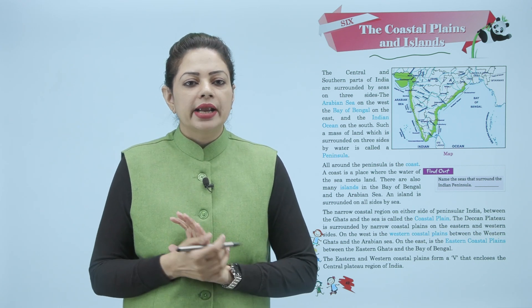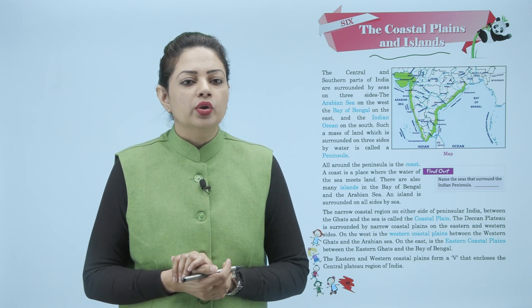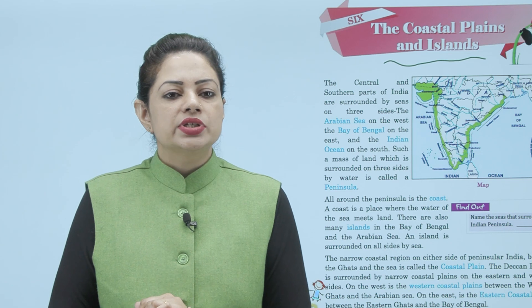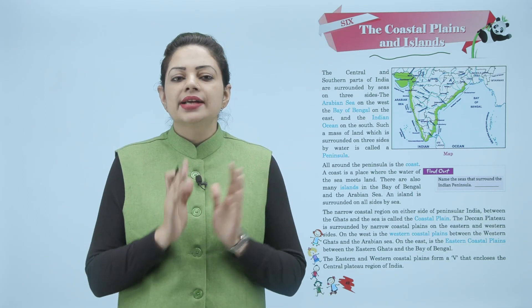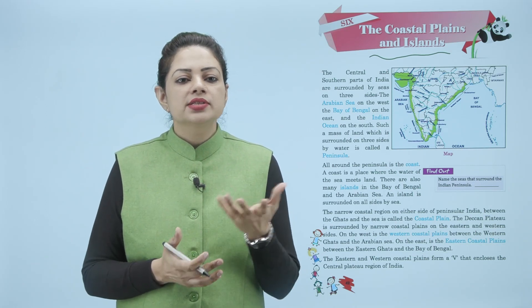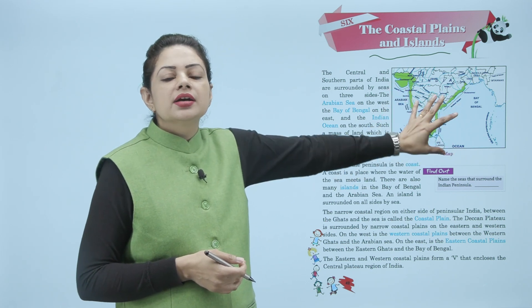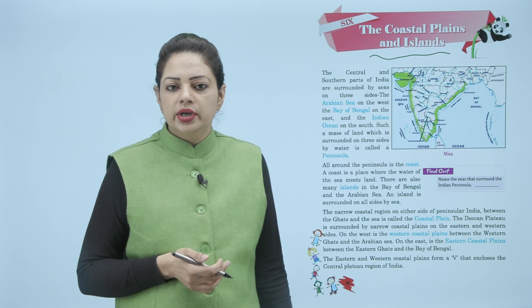The central and southern parts of India are surrounded by seas on three sides — the Arabian Sea on the west, the Bay of Bengal on the east and the Indian Ocean on the south. Such a mass of land which is surrounded on three sides by water is called a peninsula. Aisa land area jo teen sides se water se cover hota hai, usko peninsula bolte hai.